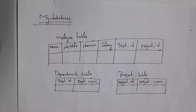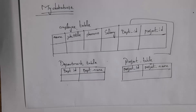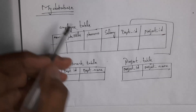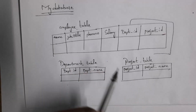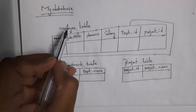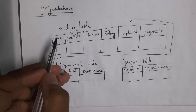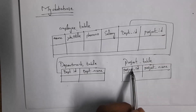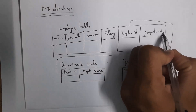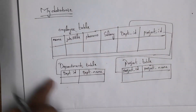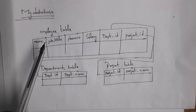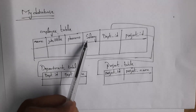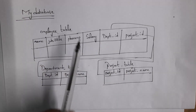Similarly, the department table contains two columns: department ID and department name. The project table contains project ID and project name columns. Since employees work in a department, we can establish a relationship between the employee table and department table. Department ID is common to both tables, so we can establish a relationship by connecting these two columns. This entire structure — how many tables are present, the table names, how many columns each table has, the column names, and the relationships — is considered as schema.